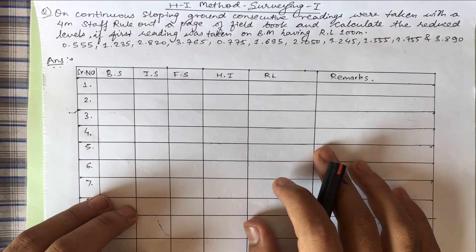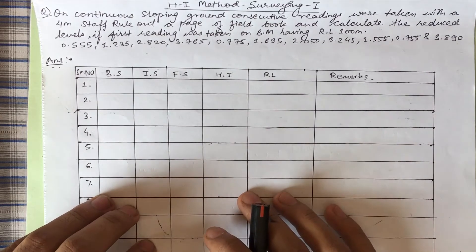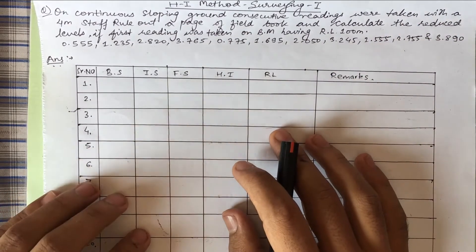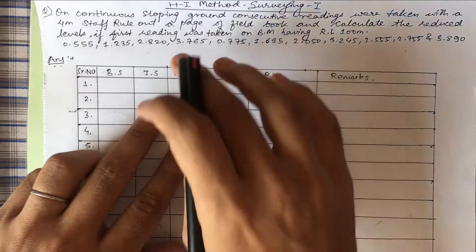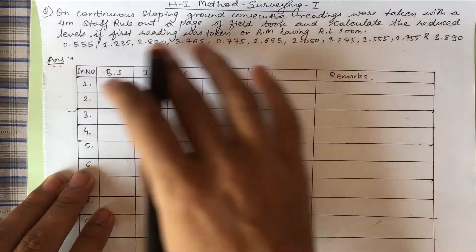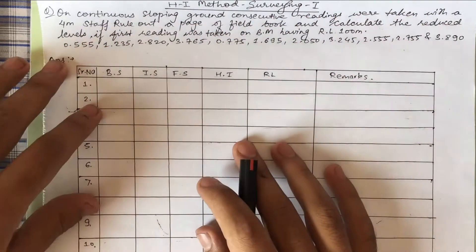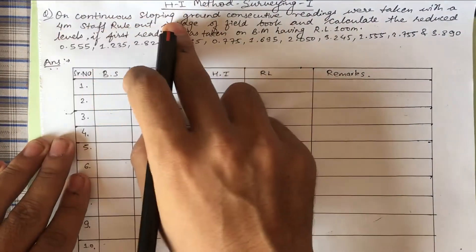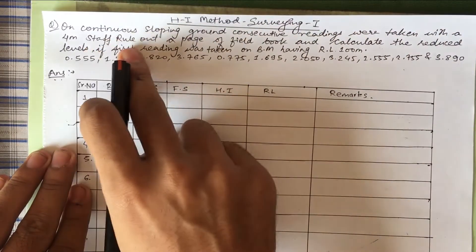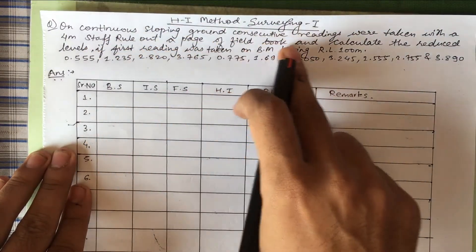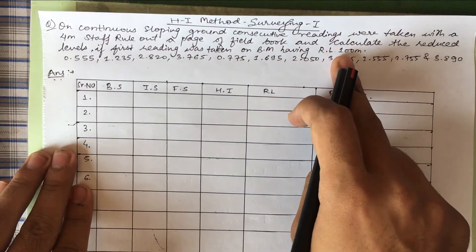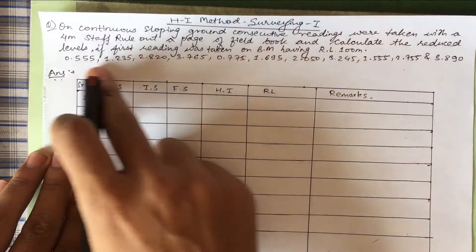Before going to the equation, if you haven't watched my previous video, go through it once. I have kept it on the playlist. It will give you more ideas for today's topic. Let's read the equation. On continuous sloping ground, consecutive readings were taken with a four meter staff. Rule out a page of field book and calculate the reduced level. The first reading was taken on a benchmark having reduced level 100 meters.